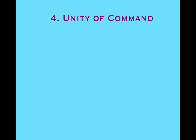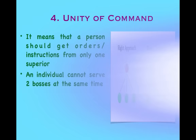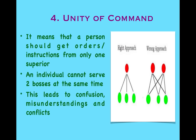The fourth principle is Unity of Command. It means that a person should receive orders or instructions from one superior only — an individual cannot serve two bosses at the same time. As shown in the picture, the right approach has one boss with subordinates reporting to them, but the wrong approach shows two bosses giving orders simultaneously, which can cause confusion, misunderstandings, and conflicts. So unity of command is very important in an organization.